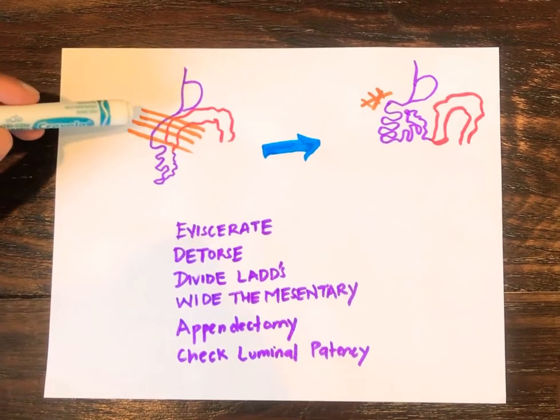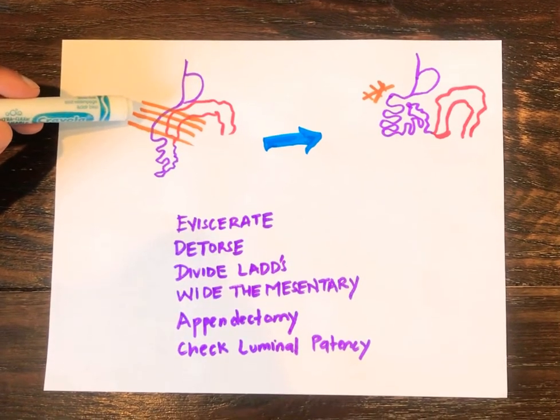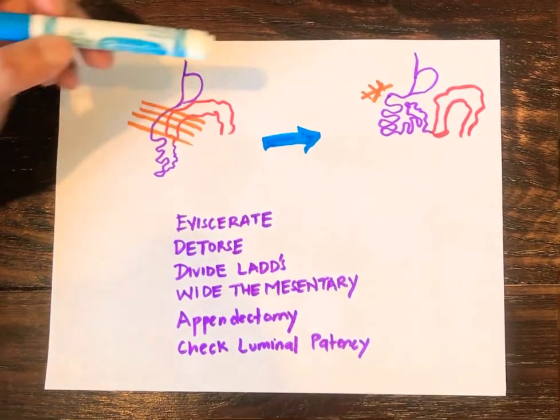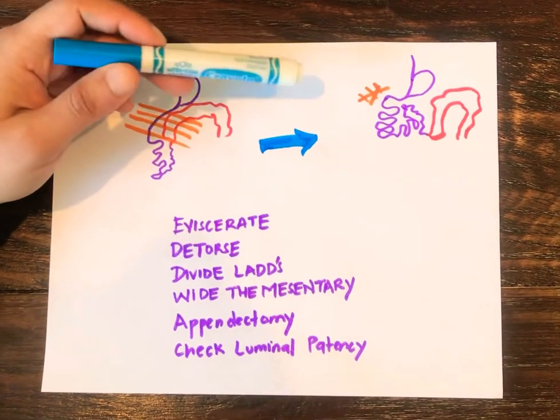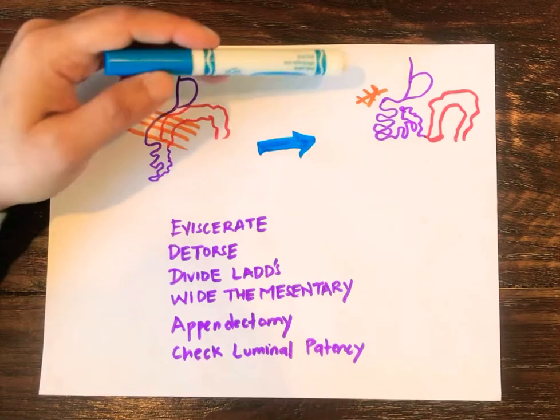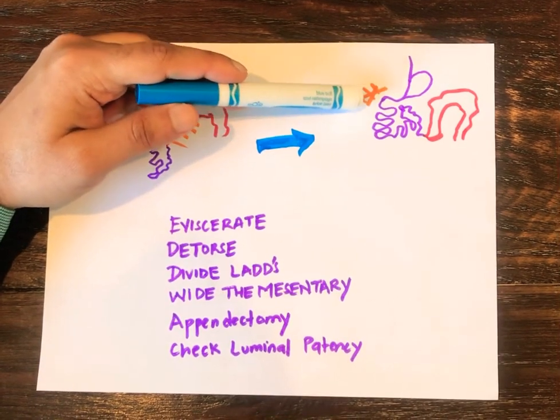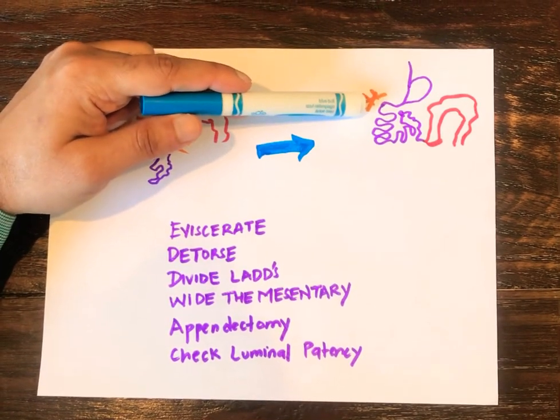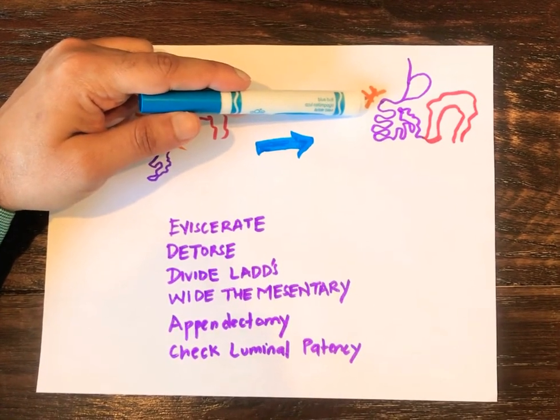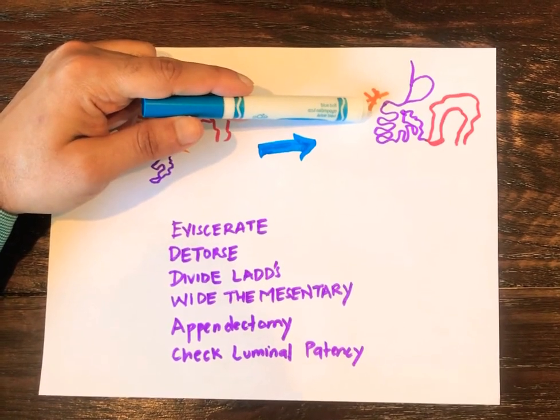Now this is important. We started with this anatomy, and the configuration after repair is important. These are the Ladd's bands — they're gone. The duodenum and the small bowel are now all on the right side.